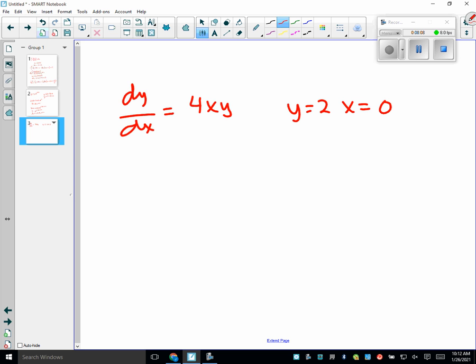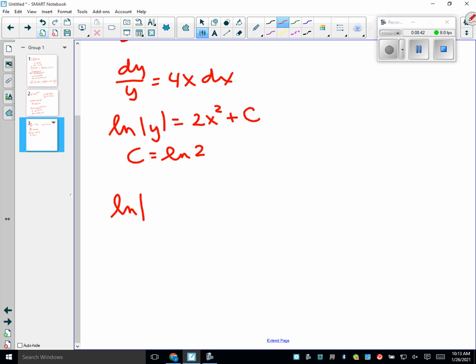I think we do dy over Y equals 4x dx, right? Yeah. So, ln of Y equals 2x squared plus C. What is C? Well, C is ln of 2.